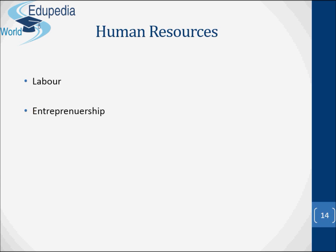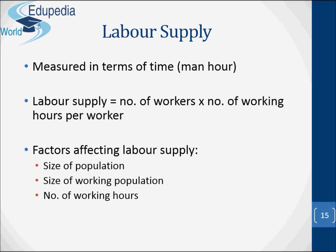Human resources are related to labor and entrepreneurship. Labor supply is measured in terms of time or man-hours. The labor supply equals the number of workers times the number of working hours per worker. The size of population, the size of the working population, and the number of working hours are all factors that affect labor supply.